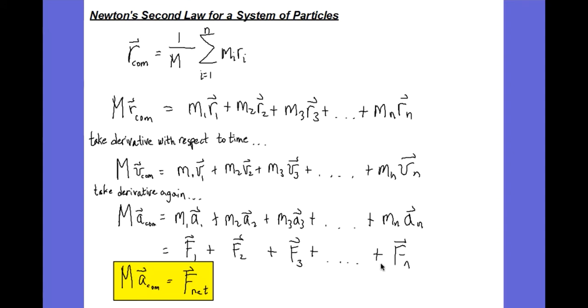And what we'll be left with is only the forces that do not have pairs within the system. In other words, we'll be left with only external forces acting on the system. So the net external force acting on a system of particles is equal to the mass of that system times the acceleration of the center of mass of the system.